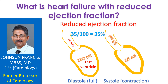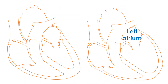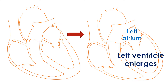Normal ejection fraction of the left ventricle is above 50%. In heart failure with reduced ejection fraction, the ejection fraction is below 40%. When the left ventricle is unable to pump out blood well, it enlarges to accommodate the remaining blood.